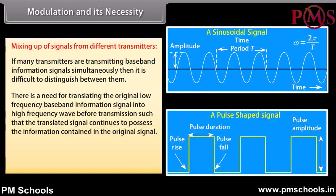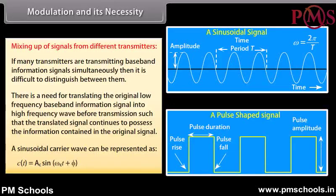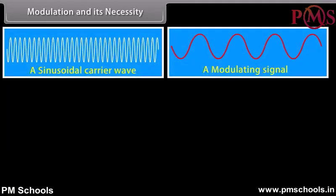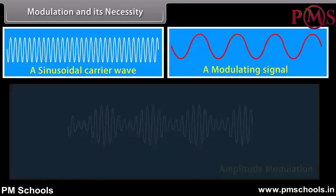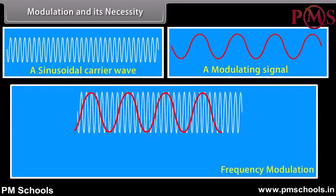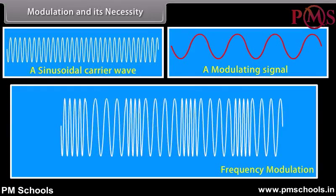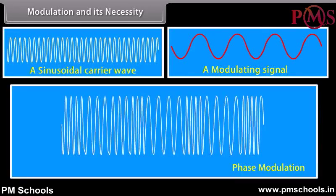A sinusoidal carrier wave can be represented as C(t) = Ac sin(ωc·t + φ). There are three types of modulation: amplitude modulation, frequency modulation, and phase modulation.